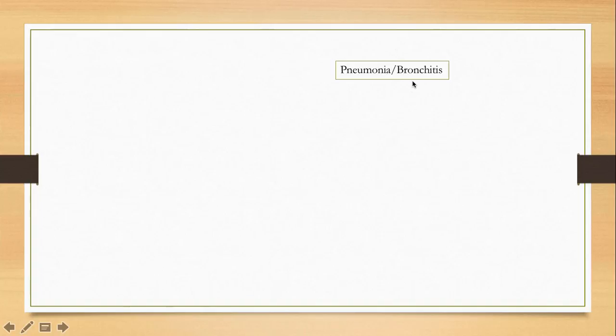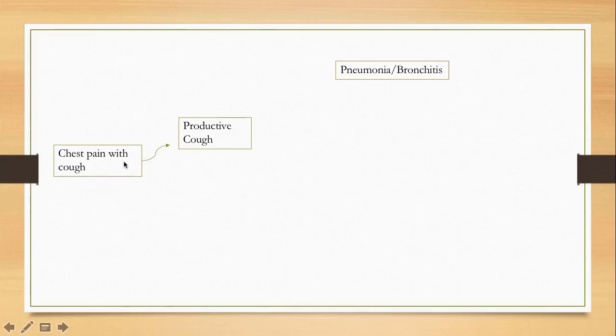Next is pneumonia or bronchitis. Patients with pneumonia can also present with chest pain, although the most common chief complaint with pneumonia is usually fever, shortness of breath, cough, and phlegm. Patients with bronchitis usually present with cough and phlegm only, without as much fever or shortness of breath. If chest pain is present with cough, we should think about pneumonia, especially in older patients who don't have typical textbook presentations.